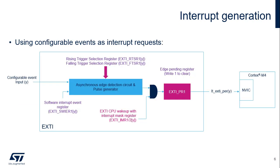This figure explains the various stages enabling the conversion of a configurable event active edge into an interrupt request. The first stage is the asynchronous edge detection circuit configured by two registers, EXTI_RTSR1 and EXTI_FTSR1. Any edge, possibly both, can be chosen. The software can emulate a configurable event by setting the corresponding bit in the EXTI_SWIER register; the bit is auto-cleared by hardware. An AND gate is used to mask or enable the generation of the interrupt to the CPU NVIC. Finally, a flag is set in the EXTI_PR1 register when the interrupt is generated to the CPU NVIC. This flag enables the software to determine the cause of the interrupt and is expected to be cleared by the interrupt service routine.